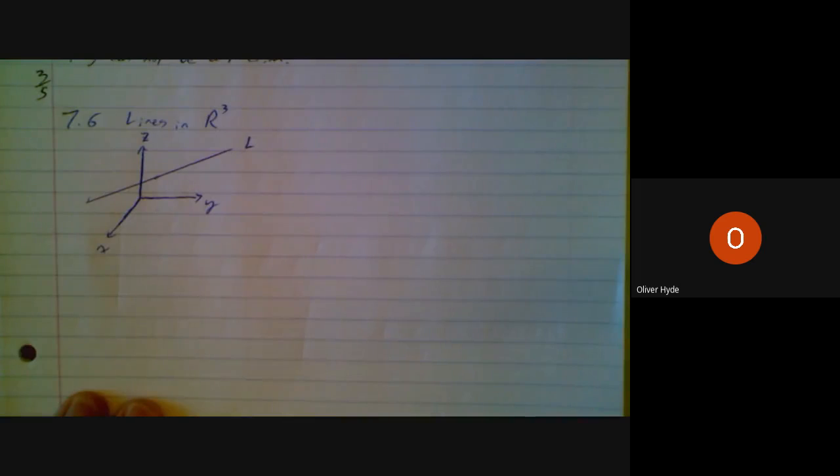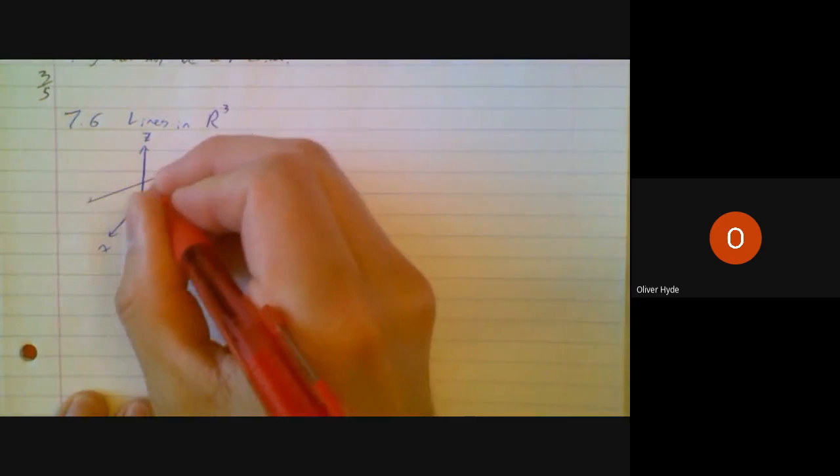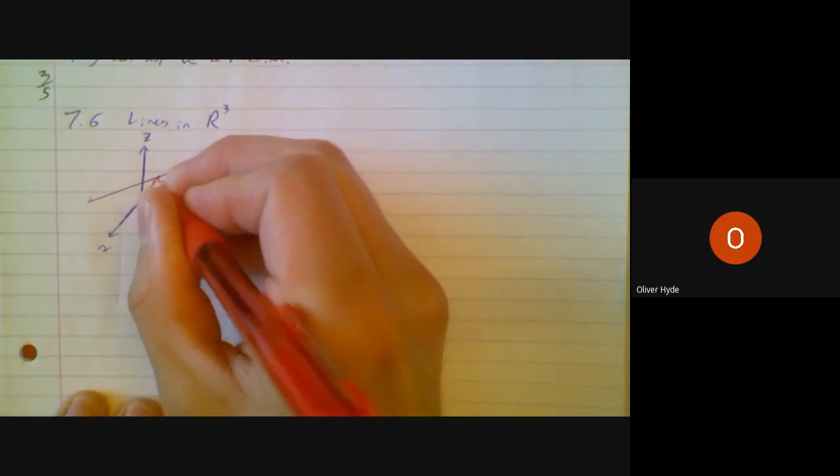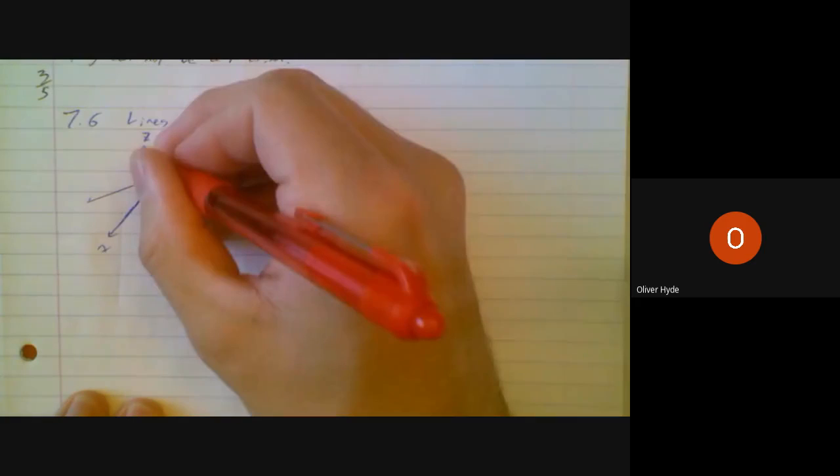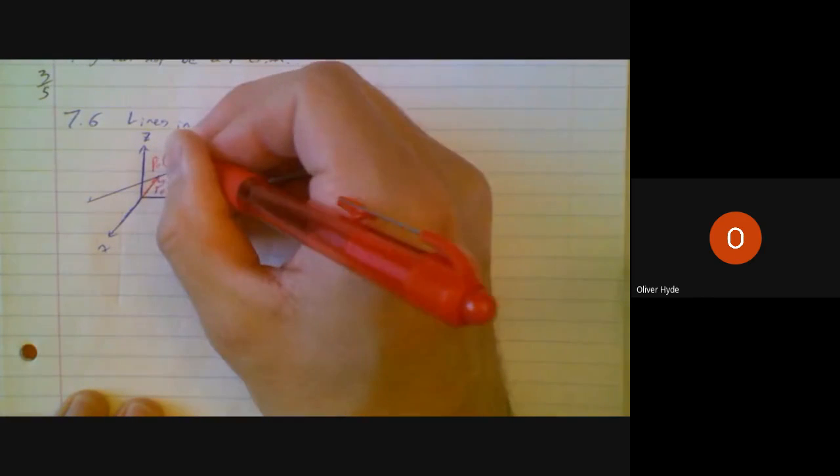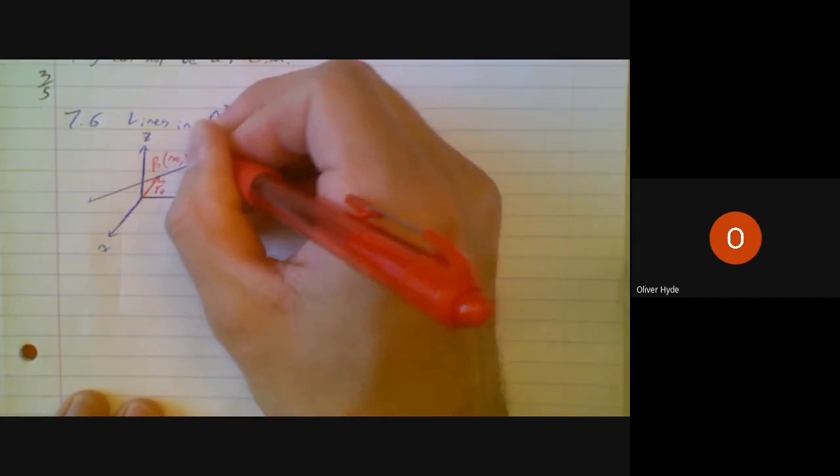To define this line, all I need is a position vector to some point on that line, let's call it P₀ with coordinates x₀, y₀, z₀. That would give me the position vector with components x₀, y₀, z₀.